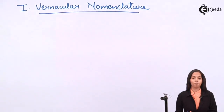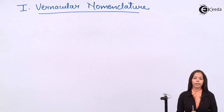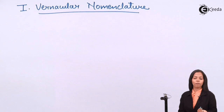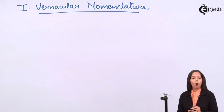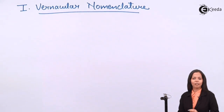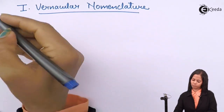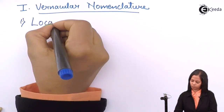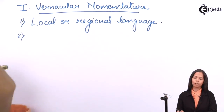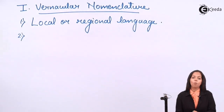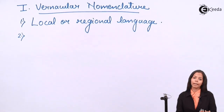First we are going to study about vernacular nomenclature. Vernacular means regional language or local language. So vernacular nomenclature means the system in which organisms are given names using local language. By this system, one organism can have many names.